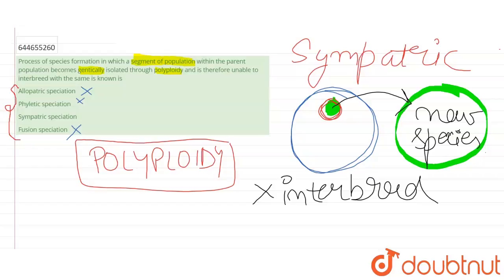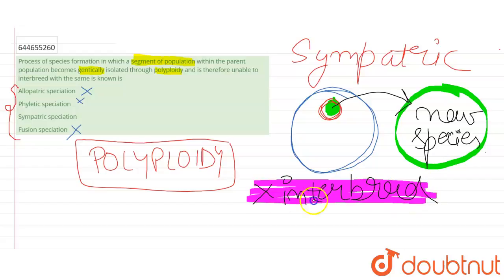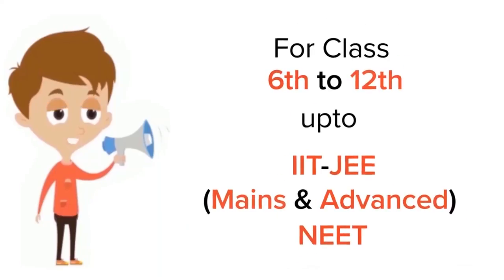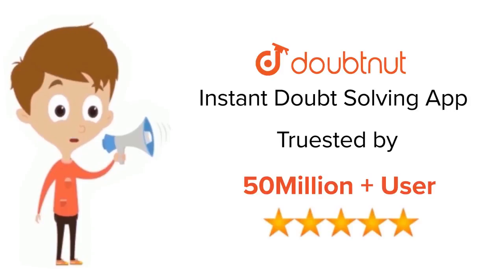Due to these genetic modifications, they don't show interbreeding with the parent population. Hence the correct answer to this question is sympatric speciation — a segment of population is separated due to a genetic or biological phenomenon like polyploidy, and thus they don't show interbreeding. The correct answer is option C, sympatric speciation. Thank you. For class 6–12, IIT JEE and NEET level, trusted by more than 5 crore students — download the DoubtNet app today.